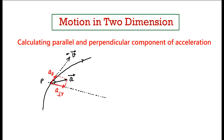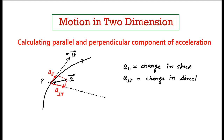What do these components signify? The parallel component tells you about the change in speed, while the perpendicular component tells you about the change in direction. For example, if an object is moving in a straight line, there is no change in direction. This means the perpendicular component of acceleration is zero — if an object is moving in a straight line, the perpendicular component equals zero.